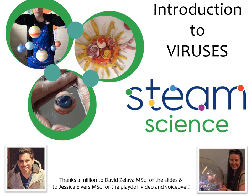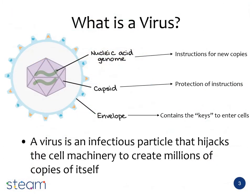We've been hearing a lot about the coronavirus for the last few months. But what is a virus anyway? A virus is an infectious particle that hijacks cell machinery to make lots and lots of copies of itself. There are different parts to a virus as you can see in the picture in the first slide. First is a nucleic acid genome which has the instructions for new copies. Next, the capsid which protects the instructions. Finally, the envelope which contains the key for the virus to enter cells.